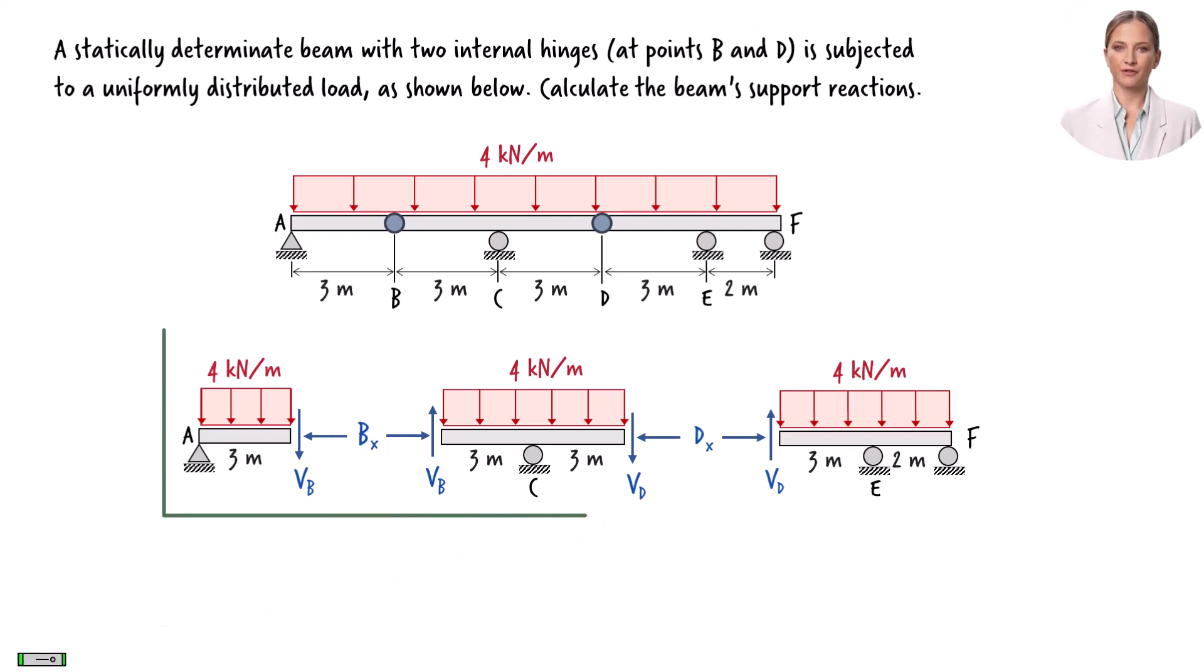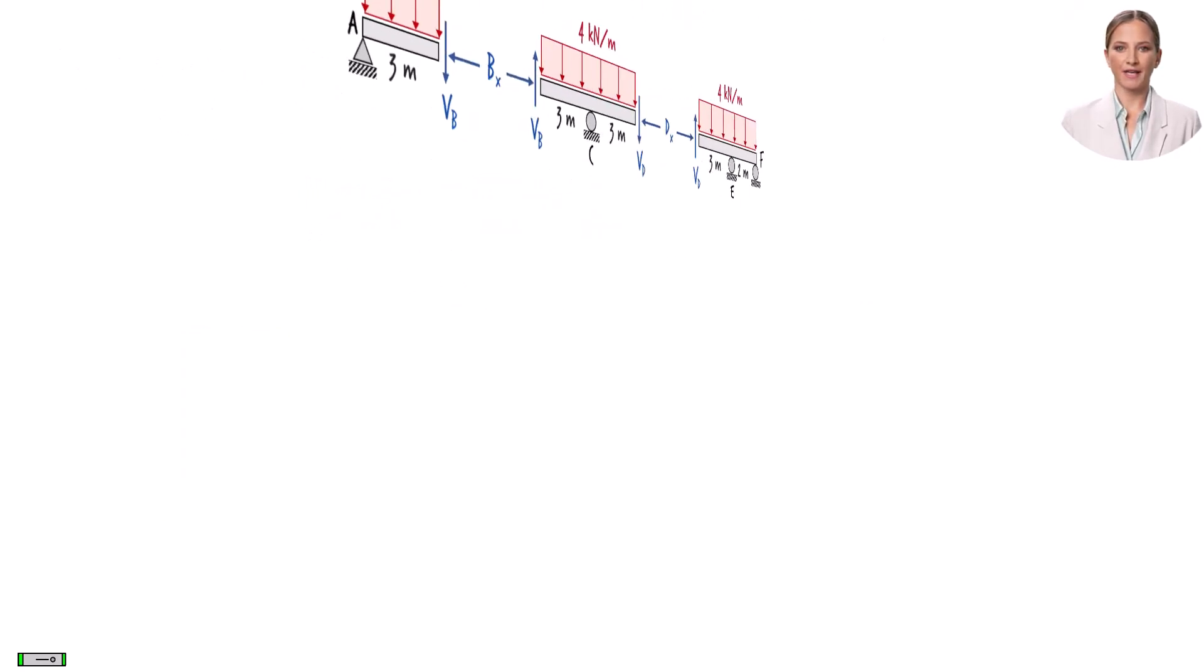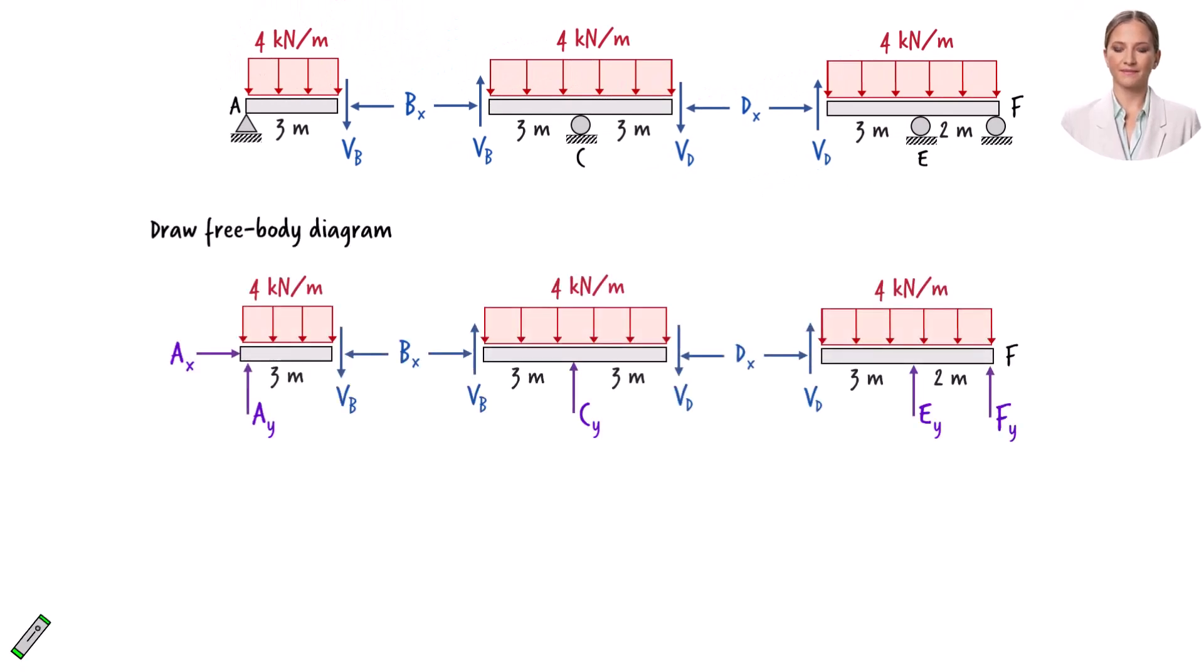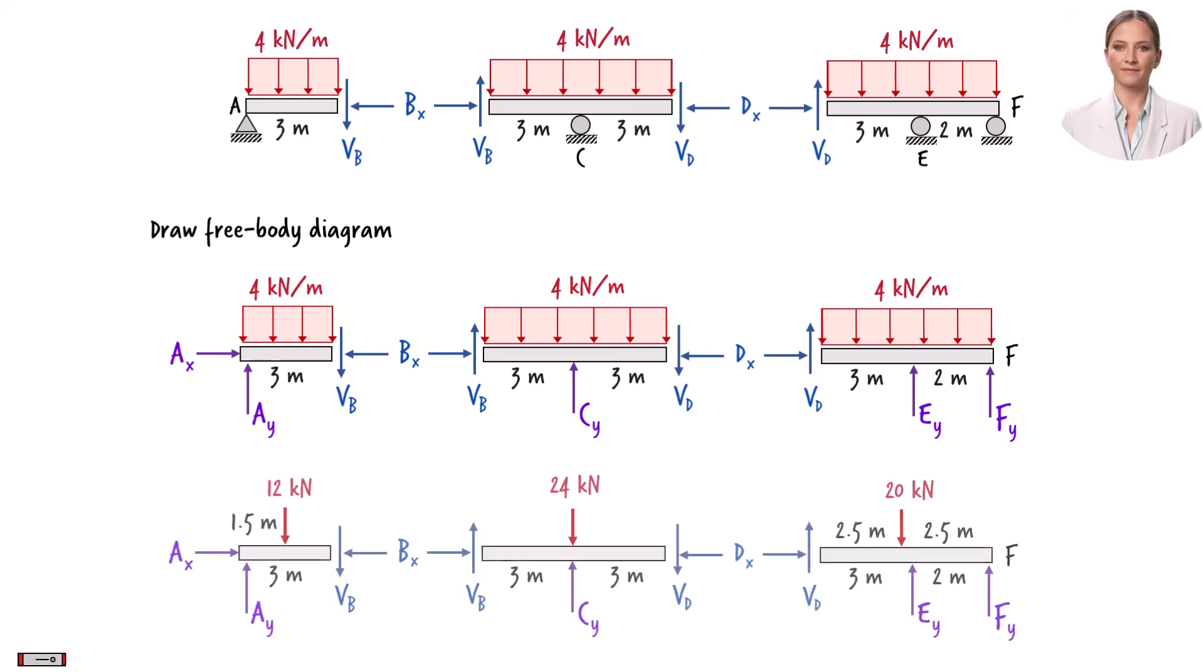Here is a partial free-body diagram of the beam. To complete this diagram, we need to include the reaction forces at the supports. There are two reaction forces at the pin support. We can simplify the load diagram by replacing the distributed load in each beam segment with its equivalent concentrated load. This is the complete free-body diagram for the beam.